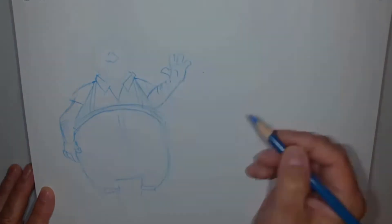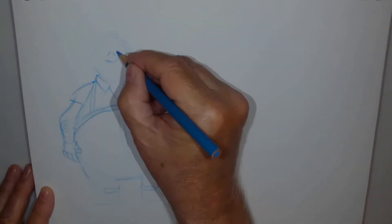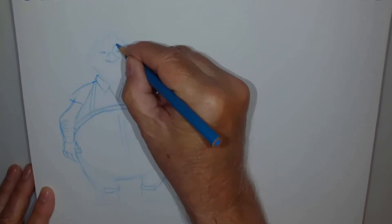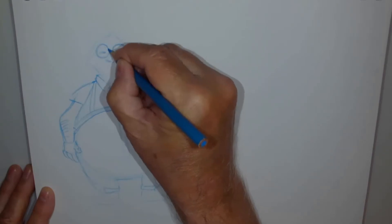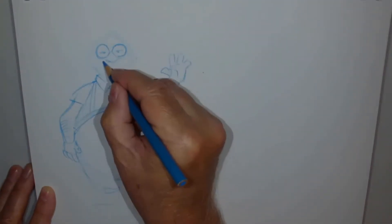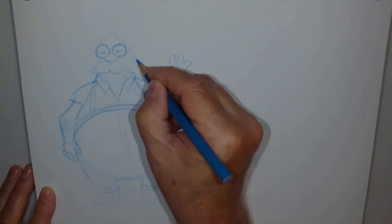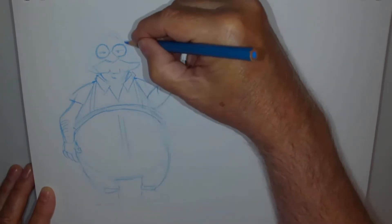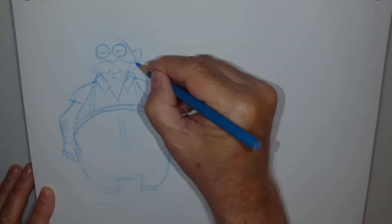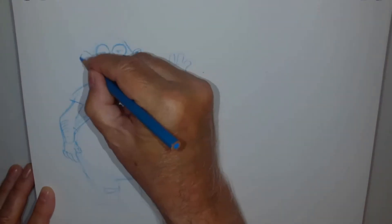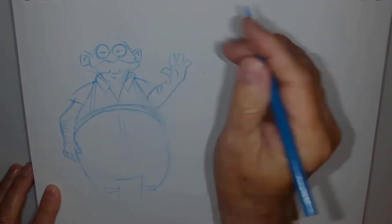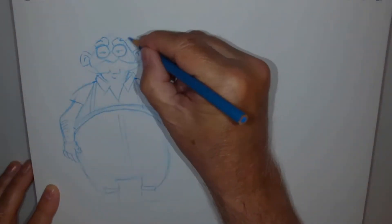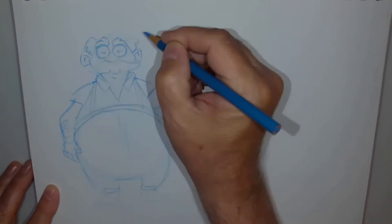I'm going to give him shorter, stubbier fingers kind of doing a wave. I'm going to go with a diamond shape for the nose. I'm going to put glasses on this character, and I think a big mustache as well. Then I'll put some ears on - coming out this way - and some bigger ears. I'll give him great big eyebrows and some messy hair.